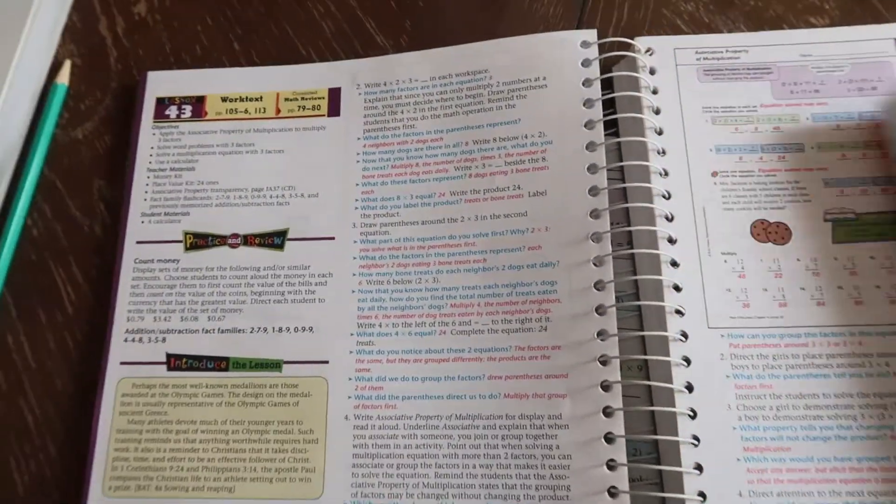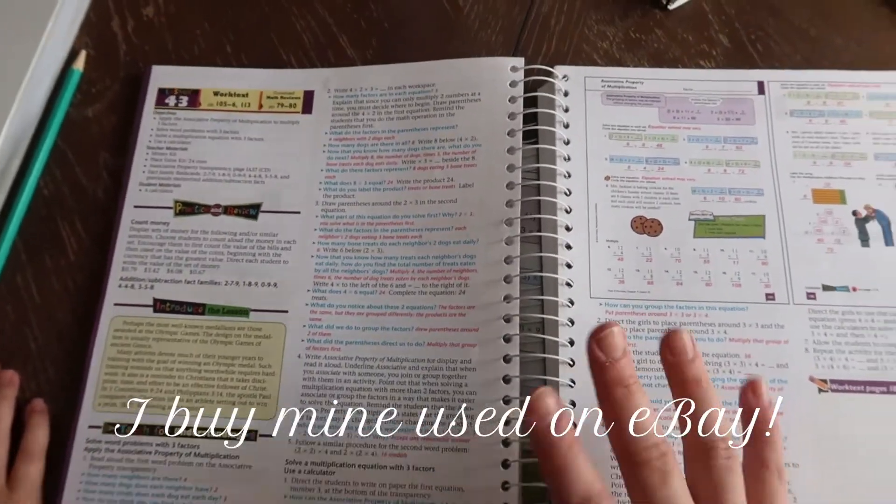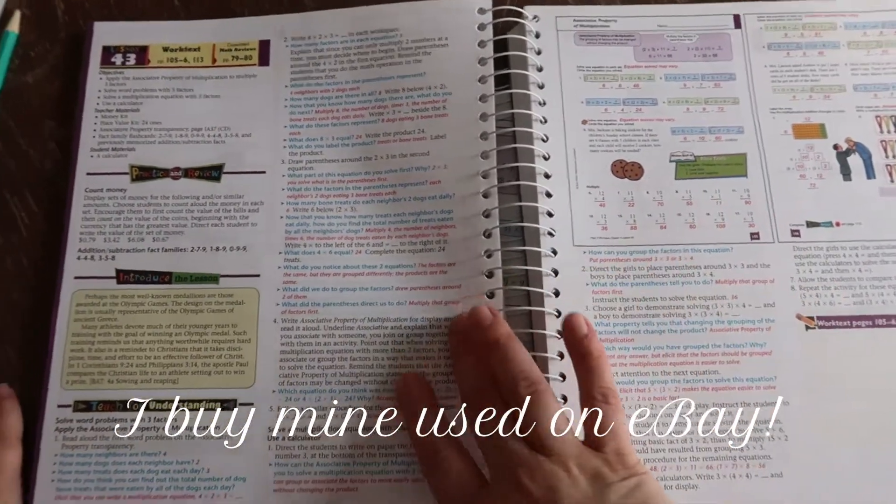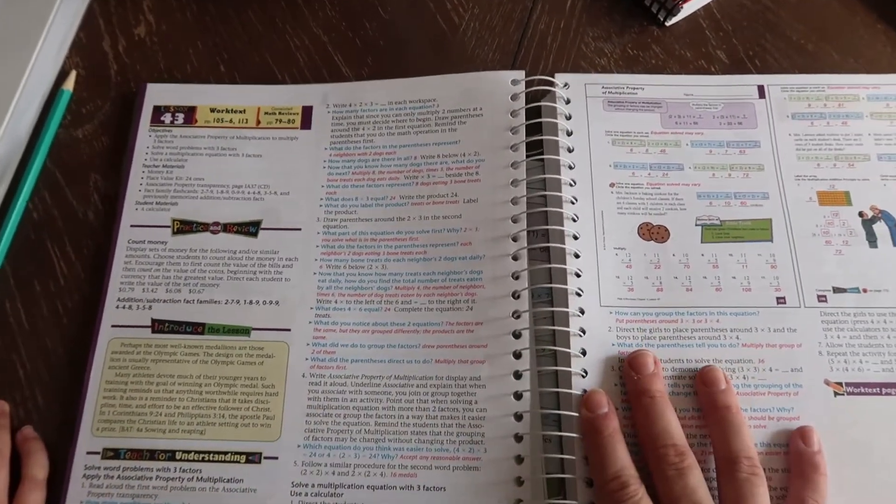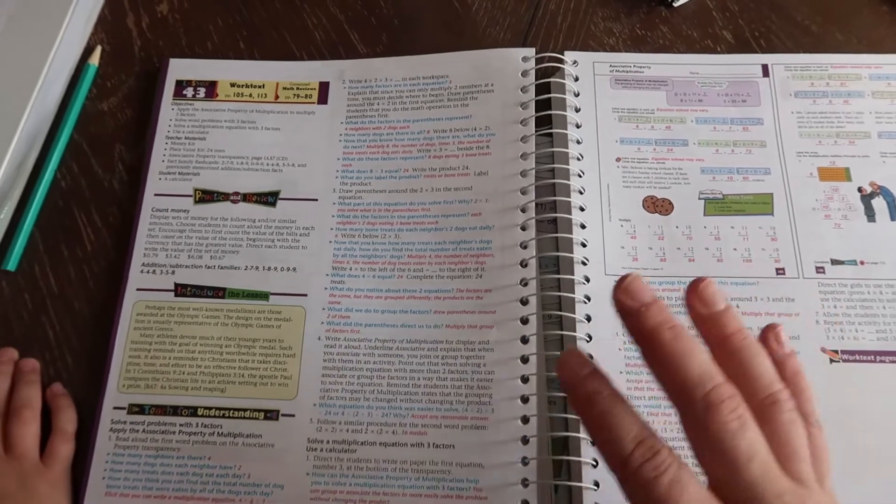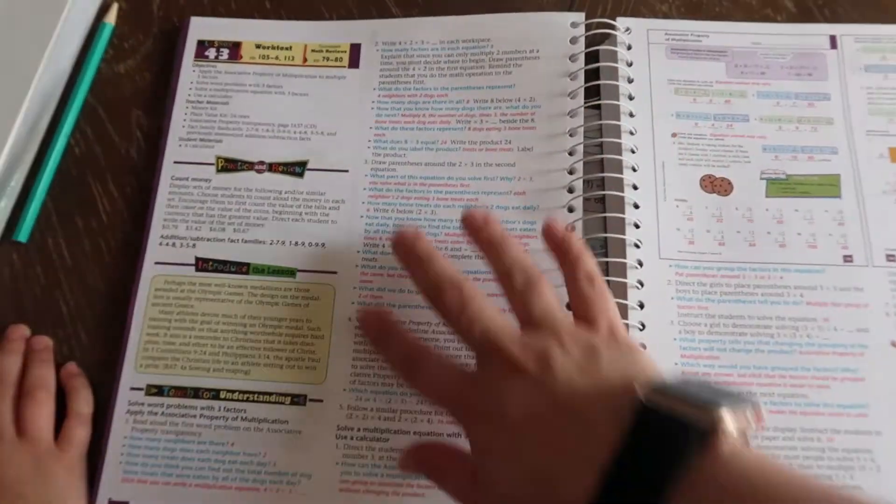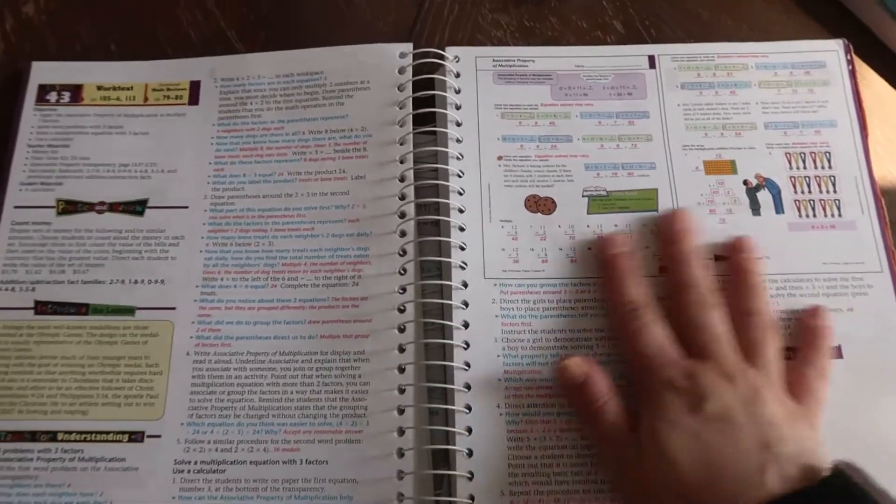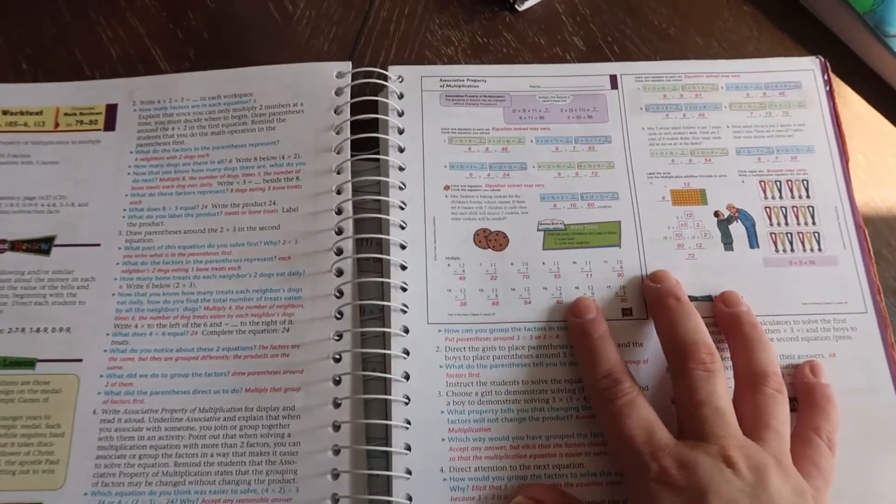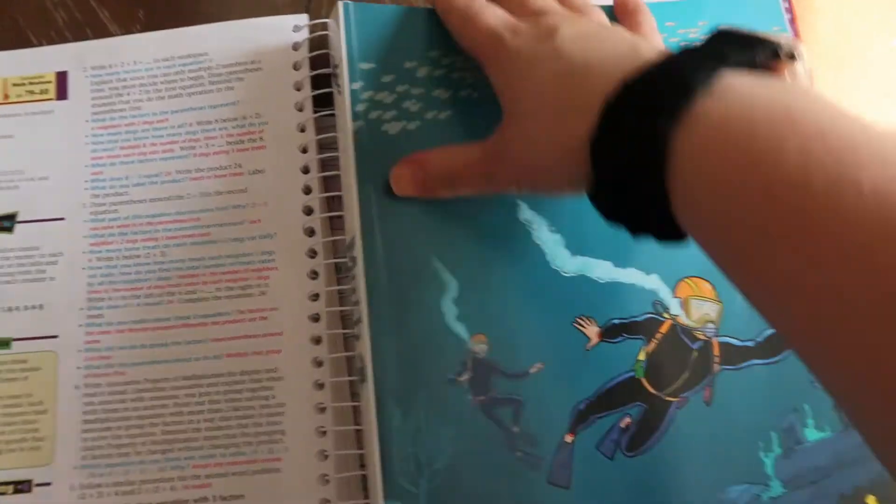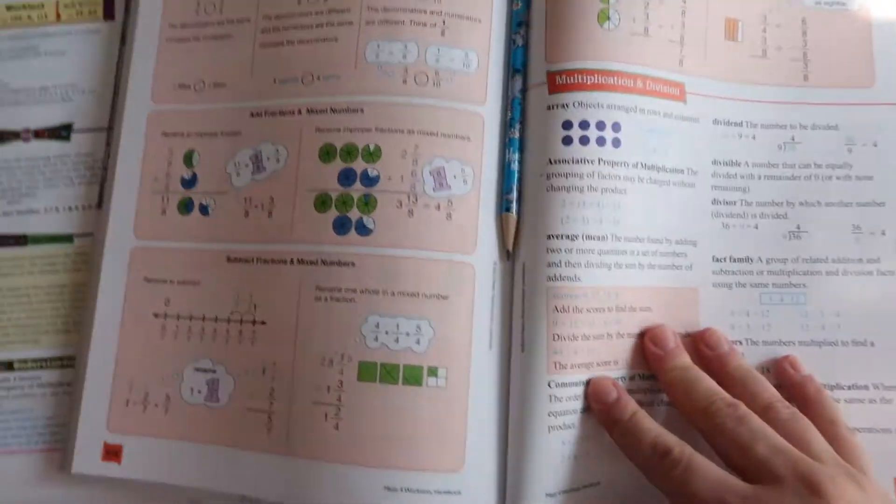So at the top, it has kind of an explanation of what you're going to be doing. So I know a lot of people will tend to not have the teacher's book. I actually like to have them just as reference. In the back of the workbook, if you don't have the teacher's manual, they have a little bit of information.